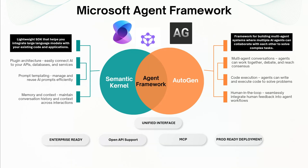That's where Microsoft Agent Framework comes in. Recognizing these challenges, the Microsoft team decided to bring both Semantic Kernel and AutoGen together under a unified interface. You get the best of both worlds — multi-agent collaboration and seamless integration all in one place, with a consistent API and a better developer experience.